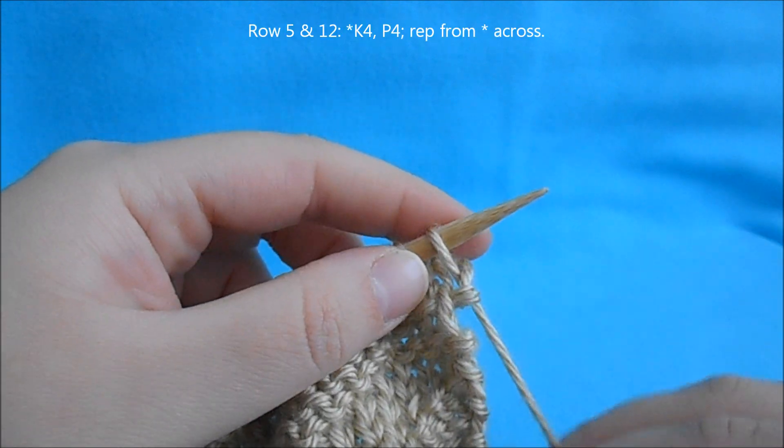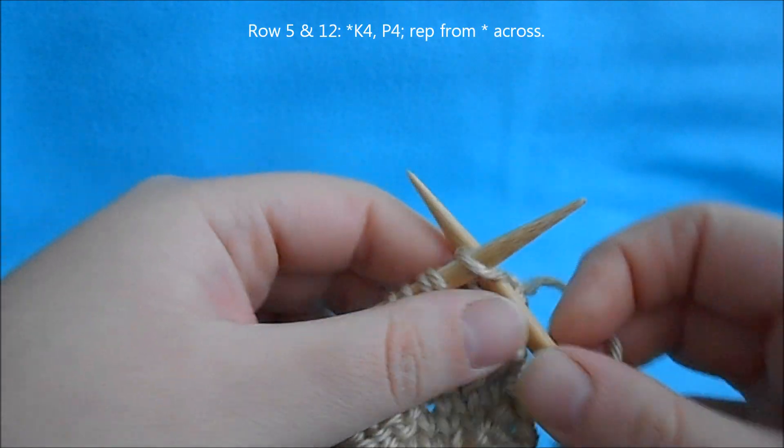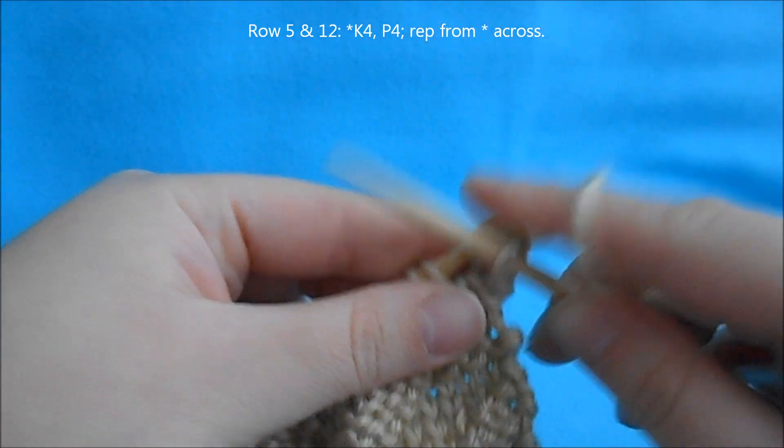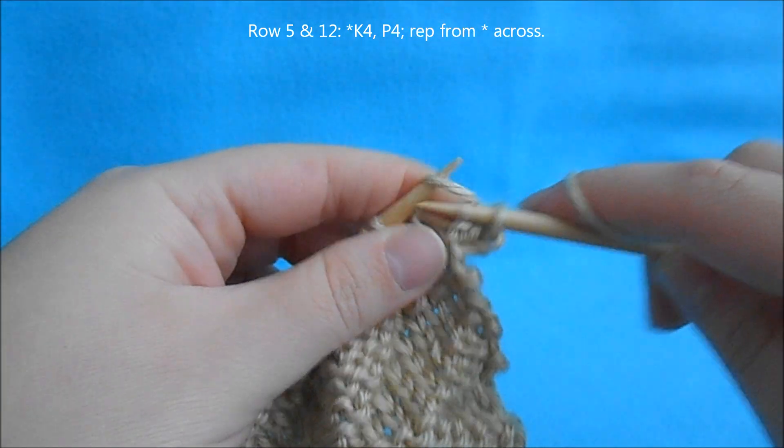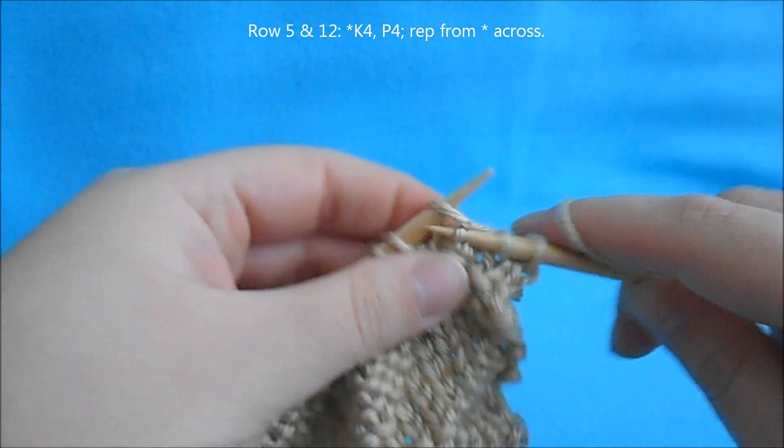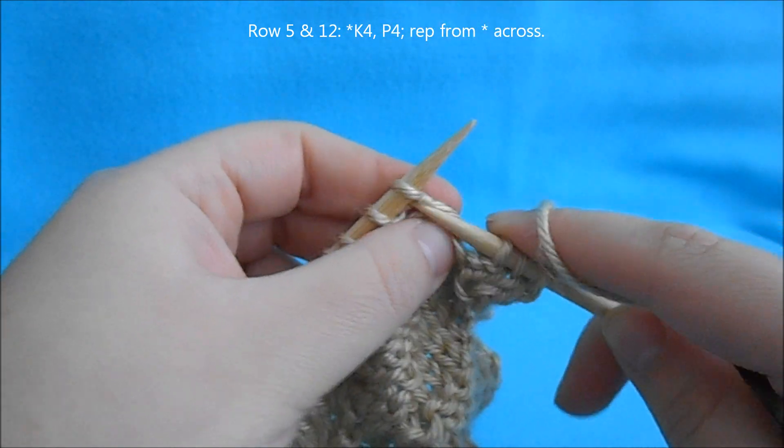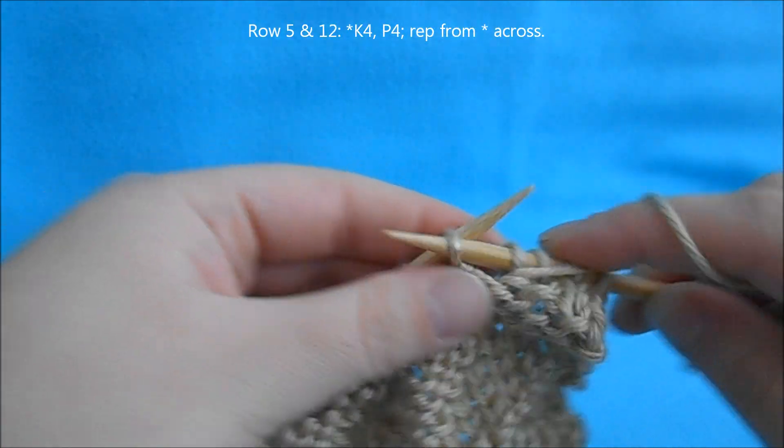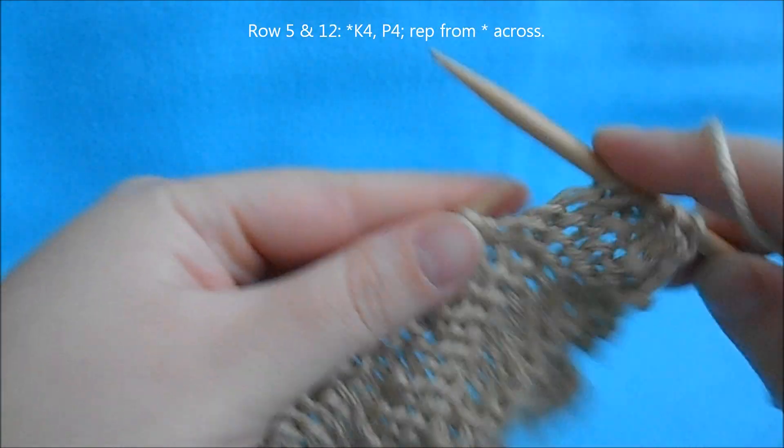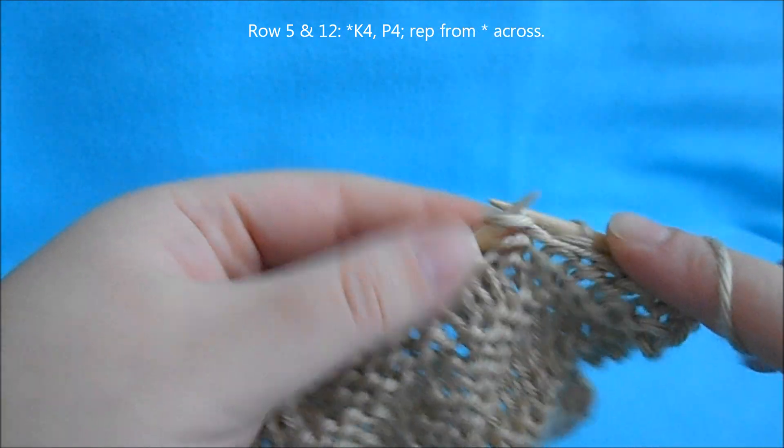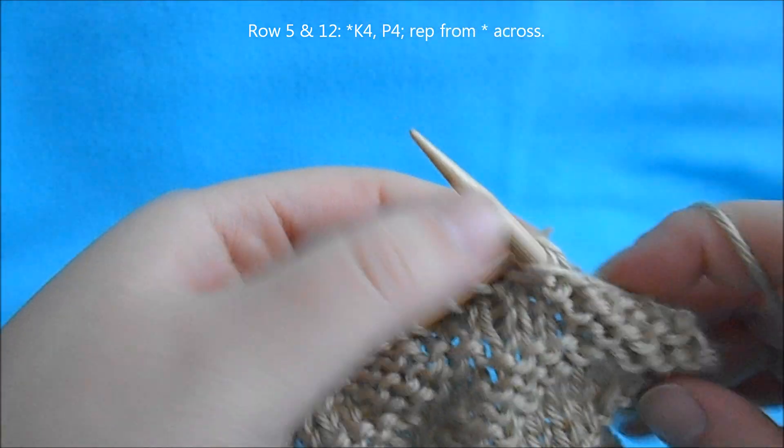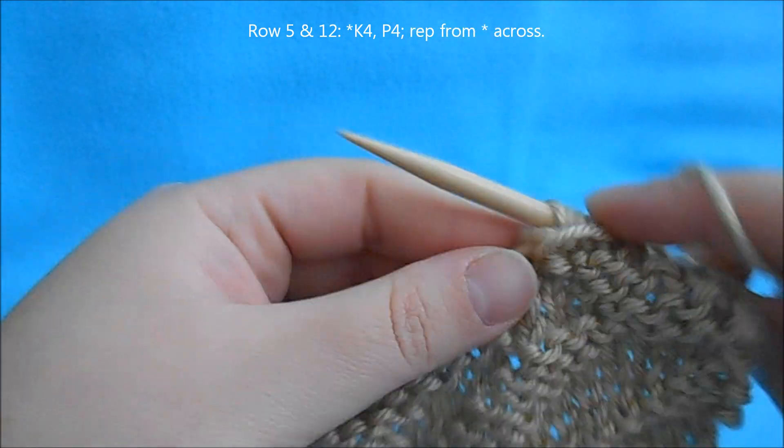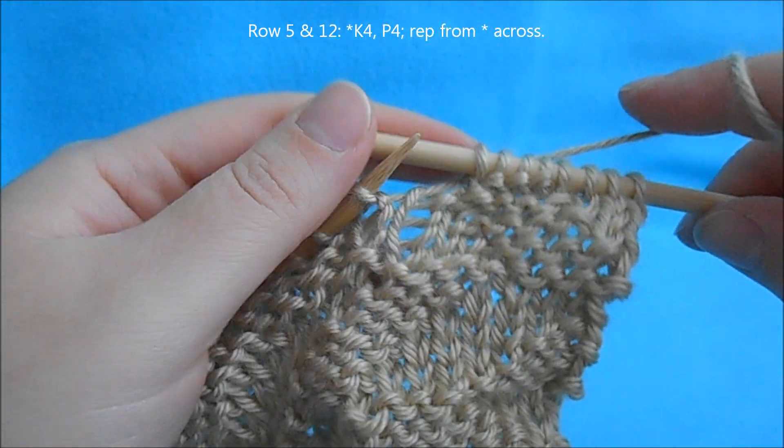For rows 5 and 12, we're going to begin a repeat of knit 4, purl 4, and repeat that across.